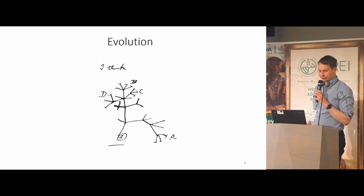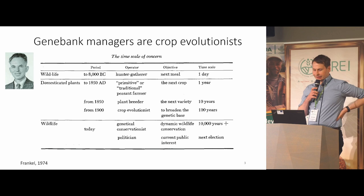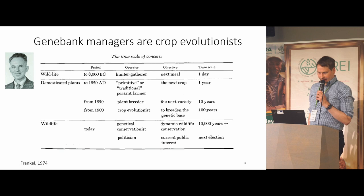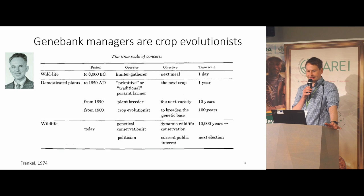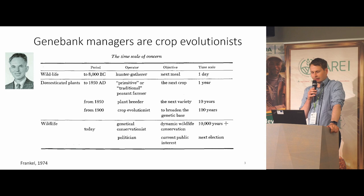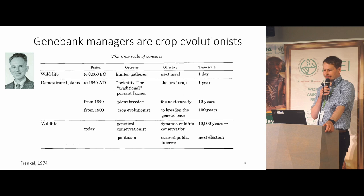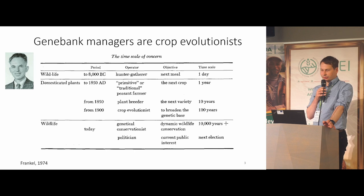Let me explain what pangenomics has to do with evolution. At IPK we host a large gene bank — I think the largest in the European Union — and normally gene bank management is seen as a tedious job of maintaining thousands of plant genetic resources. But Otto Franke, a geneticist at CSIRO, said that gene bank managers are actually crop evolutionists.